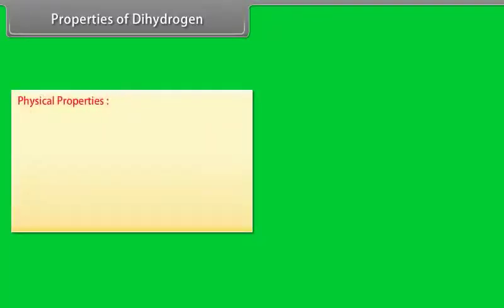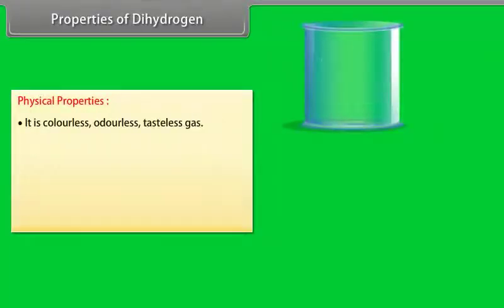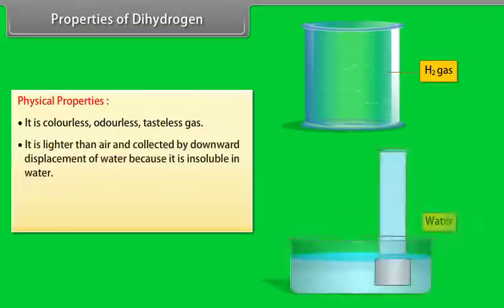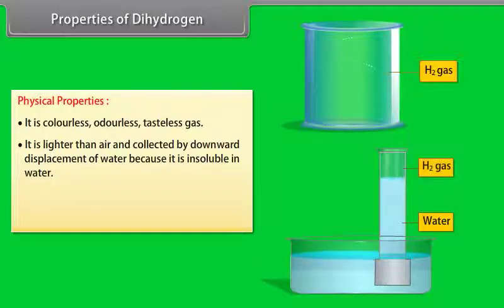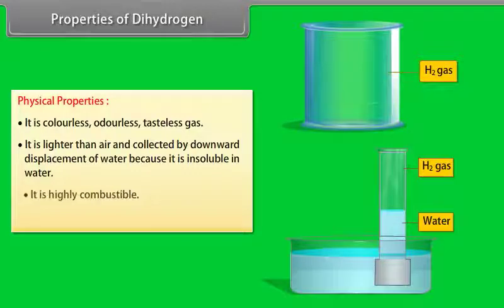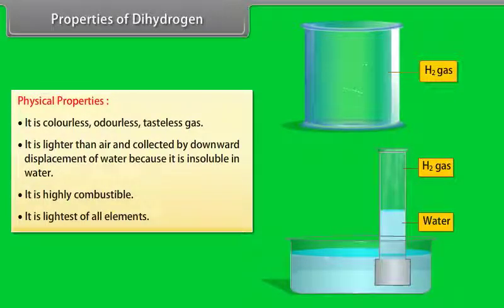Properties of dihydrogen. Physical properties: It is colorless, odorless, tasteless gas. It is lighter than air and collected by downward displacement of water because it is insoluble in water. It is highly combustible. It is the lightest of all elements.